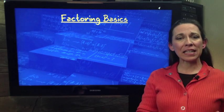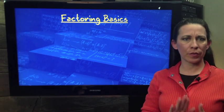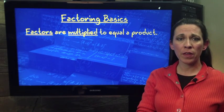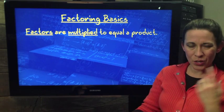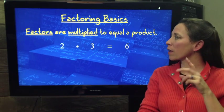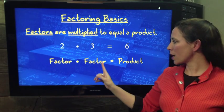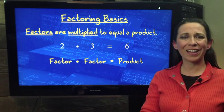Some of the basics are true for all factoring, so it's not just about the greatest common factor. The first one is factors are multiplied in order to equal a product. If we have 2 times 3 equals 6, we have a factor times a factor equaling a product. In other words, 2 and 3 are factors of 6.